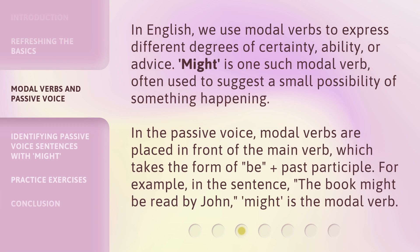In English, we use modal verbs to express different degrees of certainty, ability, or advice. Might is one such modal verb, often used to suggest a small possibility of something happening. In the passive voice, modal verbs are placed in front of the main verb, which takes the form of 'be' plus past participle. For example, in the sentence 'the book might be read by John,' might is the modal verb.